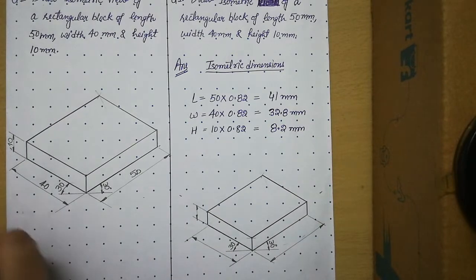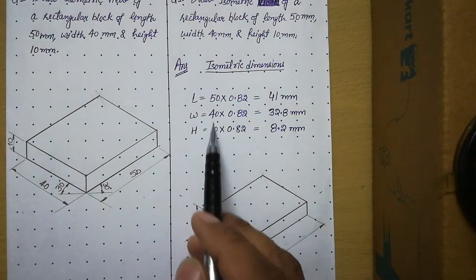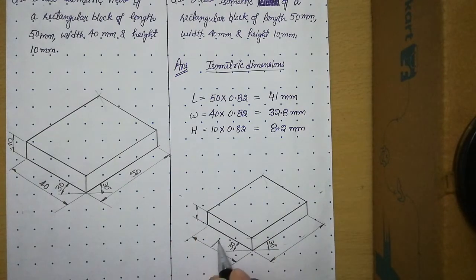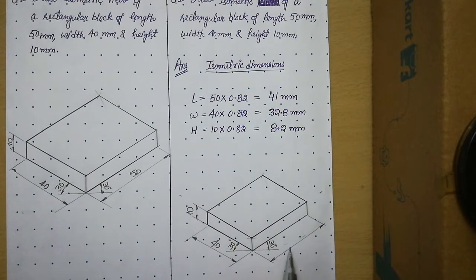But when you have to place the dimensions, you will still place the original dimensions. Means you will write here 40, this is 10 mm, this is 50 mm. So this you should understand.